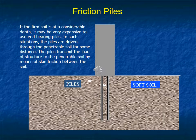Friction Piles. When the firm soil is at considerable depth, it may be very expensive to use end bearing piles. In such situations, the piles are driven through the penetrable soil for some distance. The piles transmit the load of the structure to the penetrable soil by means of skin friction between the soil and the pile. These are friction piles, as shown in the figure.